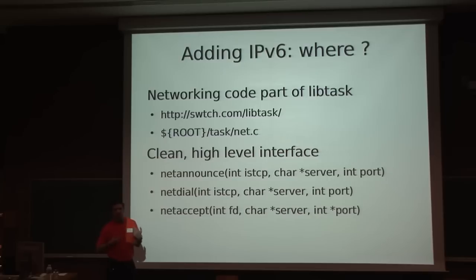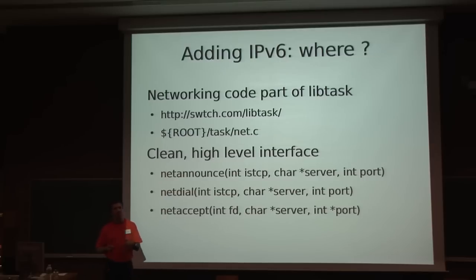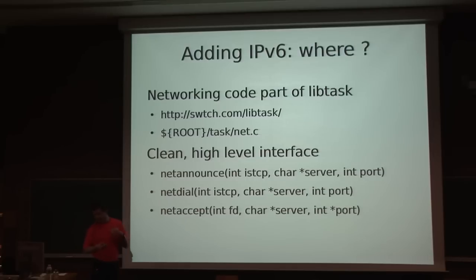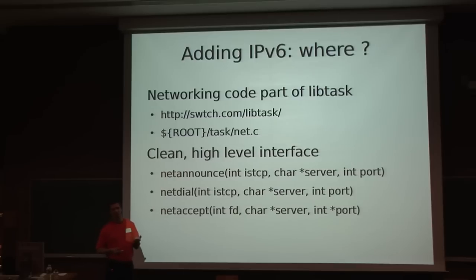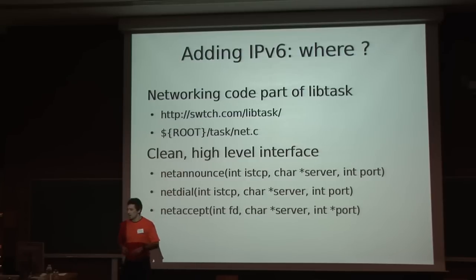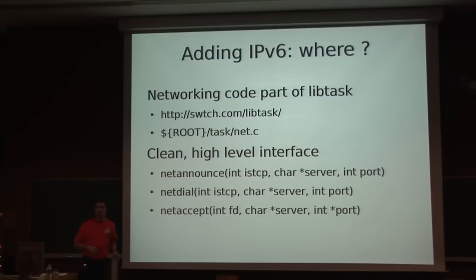I wanted a great web server that would support IPv6, so Mongrel 2 was the perfect candidate — with one detail: it didn't support IPv6. I started digging into the code and found the networking part is implemented as part of libtask, a task library by Russ Cox. The abstractions in that library are really pleasant to work with — you don't need to work with one-time-use structures. There are three primitives: announce the socket, start connecting to a client or server, and accept incoming connections. This provides a clean abstraction layer.